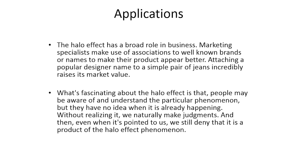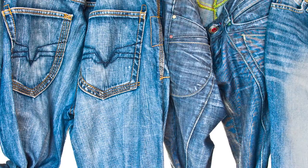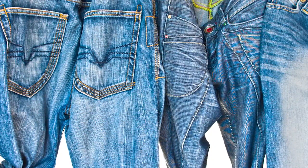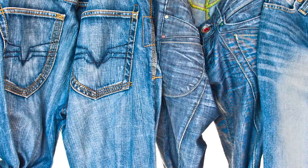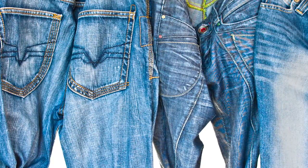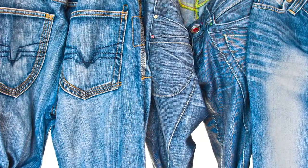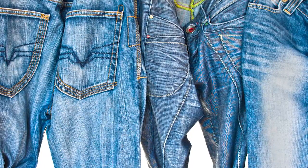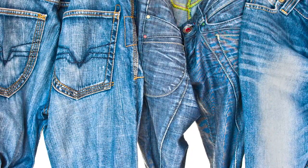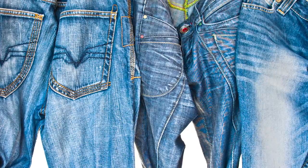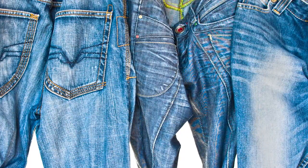The applications of this in business are pretty broad. Marketing specialists make use of associations to well-known brands or names to make their product appear better. For example, if you're marketing a pair of jeans, it may be made in the same factory as another pair of jeans, but because you lend a designer-name brand to that pair of jeans, you can add a lot of value and charge more for them. That's a halo effect leveraging the brand.